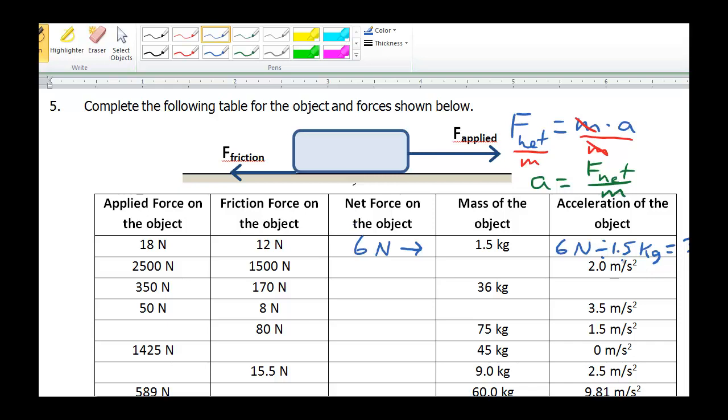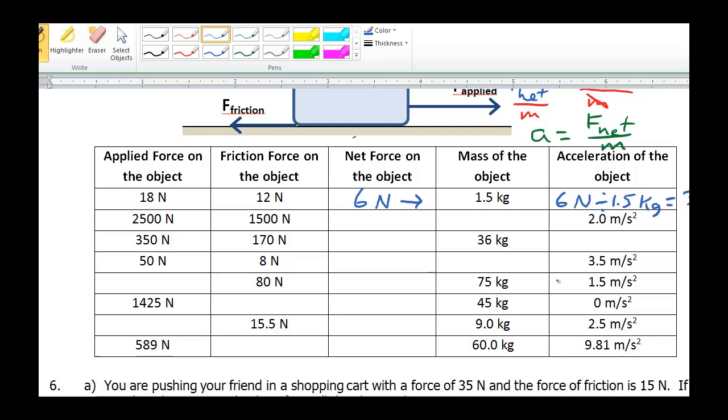Okay, so these all use the same equation. And let me do one example like this one here. 75 kilograms of mass. If the object is accelerating at a rate of 1.5 meters per second squared, then what is the net force acting on it and how much is the applied force?